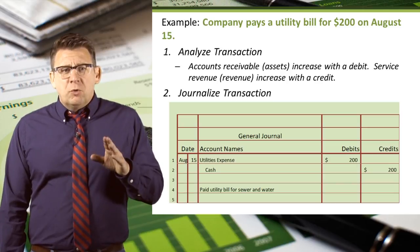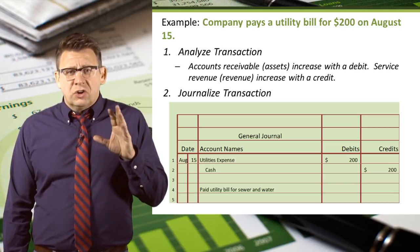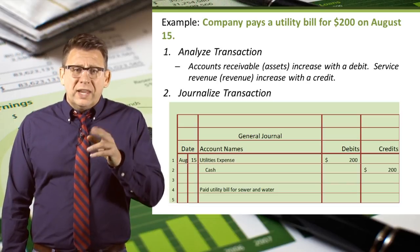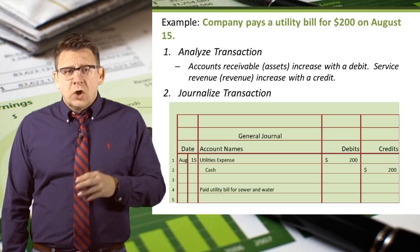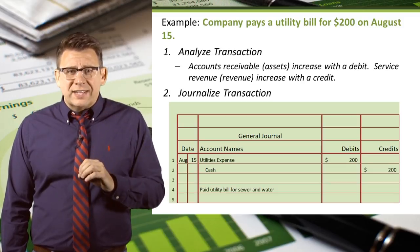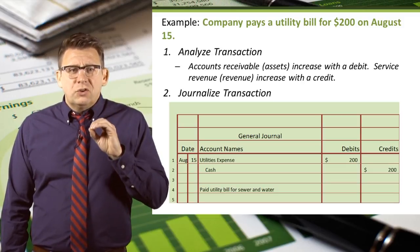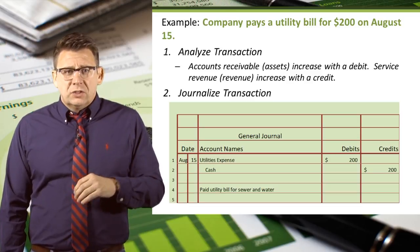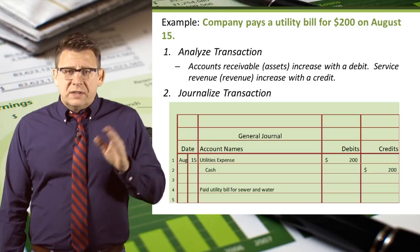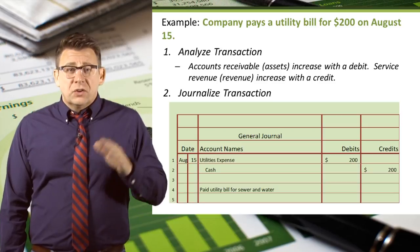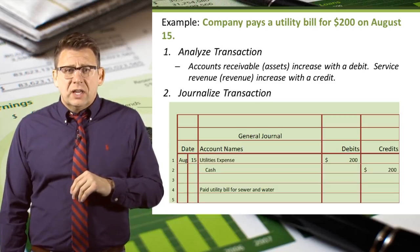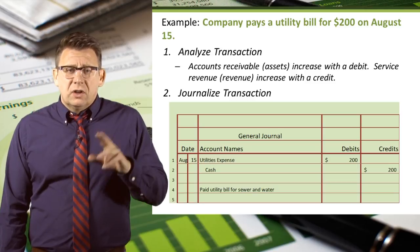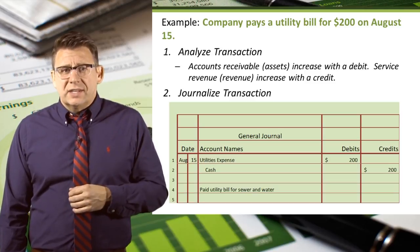I hope these brief examples have helped you understand the journalizing transaction step in the accounting cycle. One hint to remember: once you've analyzed the transaction, you don't need to re-analyze when you journalize. Just enter the date, the debit account and amount, the credit account and amount, and the description if the problem asks for it. No additional analysis needed.